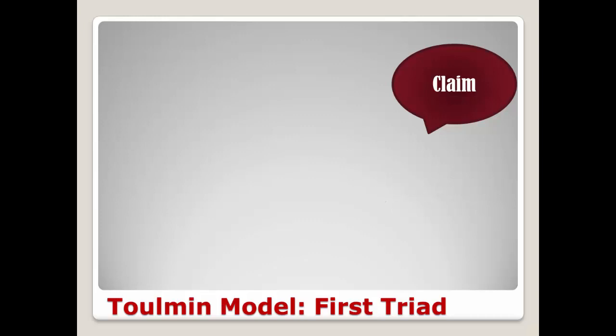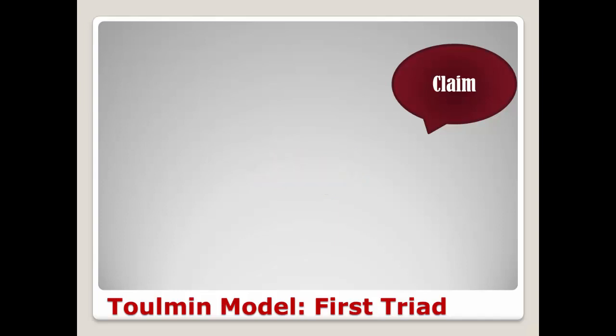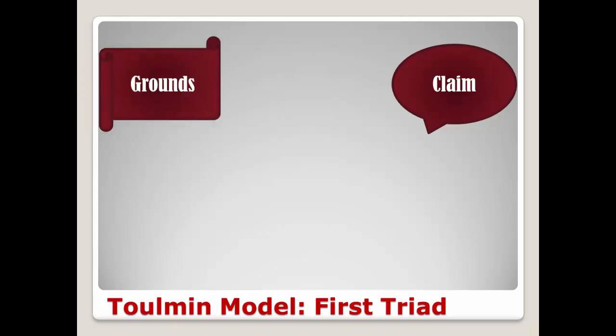Let's go back to these two example claims: you should do the dishes tonight, and it looks like it's going to rain. Most people would follow up that statement or claim with the question, why? Or, what leads you to that conclusion? Because I did the dishes last night, and I checked the paper today and it said there was a 70% chance of rain. Both of which are reasons that would support the claim. That would be the second element in the model, the grounds, which is the proof or evidence that you offer to support your claim or conclusion. Other terms for grounds are data, fact, and evidence.